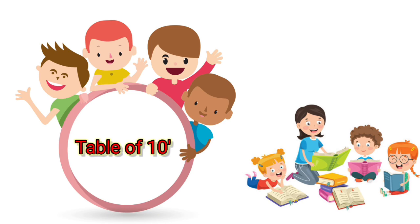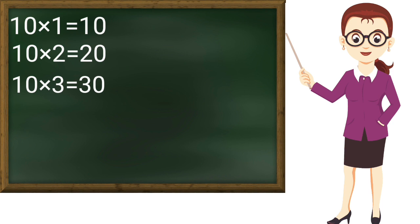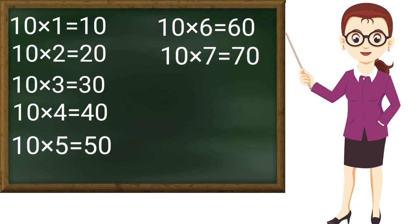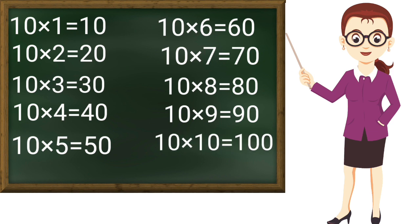Then table of 10: 10 ones are 10, 10 twos are 20, 10 threes are 30, 10 fours are 40, 10 fives are 50, 10 sixes are 60, 10 sevens are 70, 10 eights are 80, 10 nines are 90, 10 tens are 100. Thanks, ma'am.